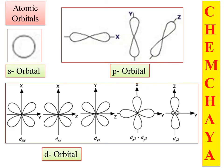Regarding atomic orbital shapes: the S orbital is spherical; the P orbital is dumbbell-shaped, oriented in three different directions — PX, PY, and PZ. The D orbital has a double shape and is oriented in five different directions: DXY, DZX, DYZ, DX²−Y², and DZ². This covers atomic orbital shape, molecular orbital shape, and hybrid orbital shape.